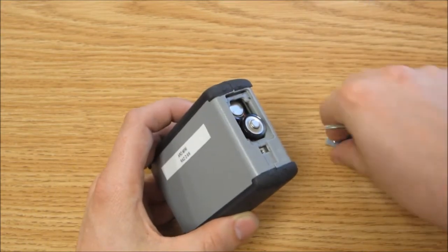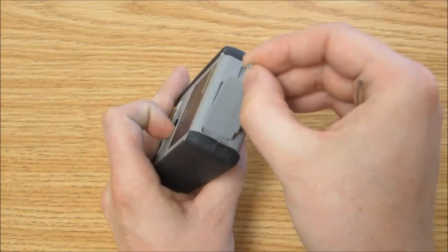Replace the housing cover and screw it in very gently. Overtightening can cause the plastic around the screw to weaken and break.